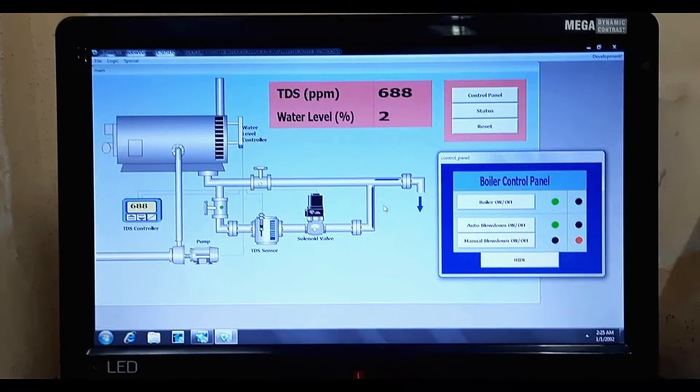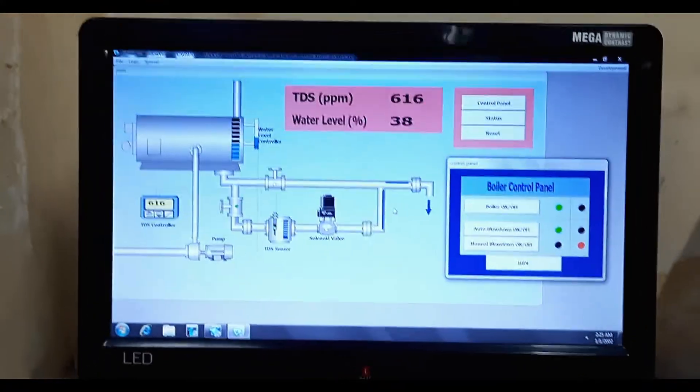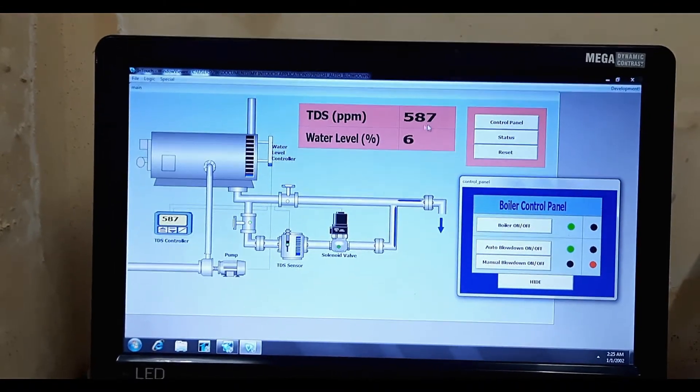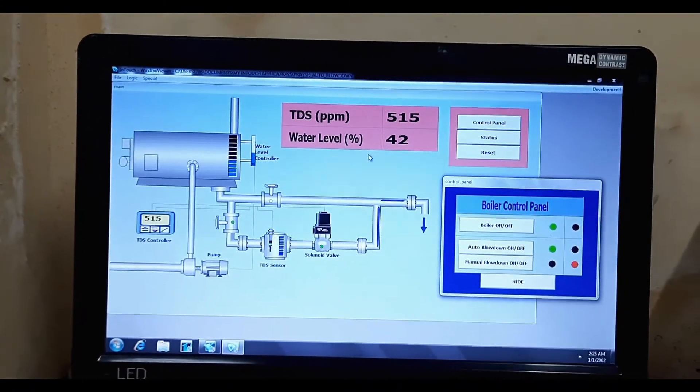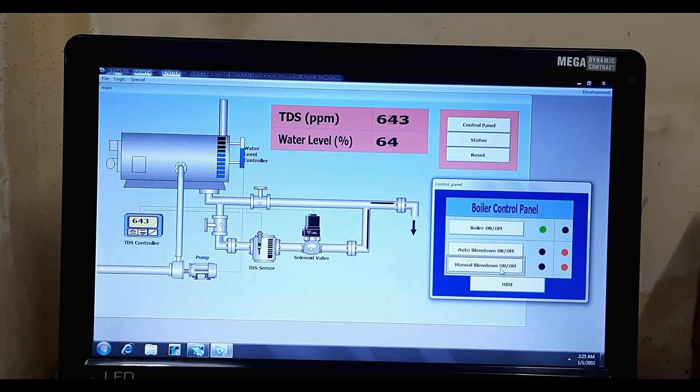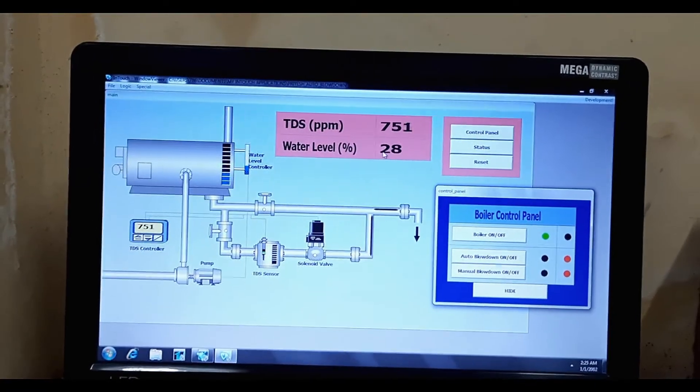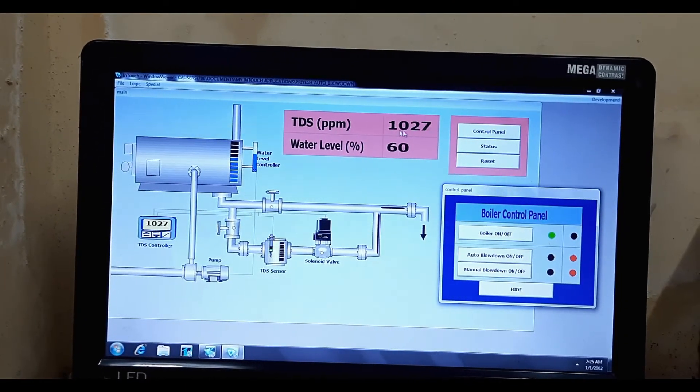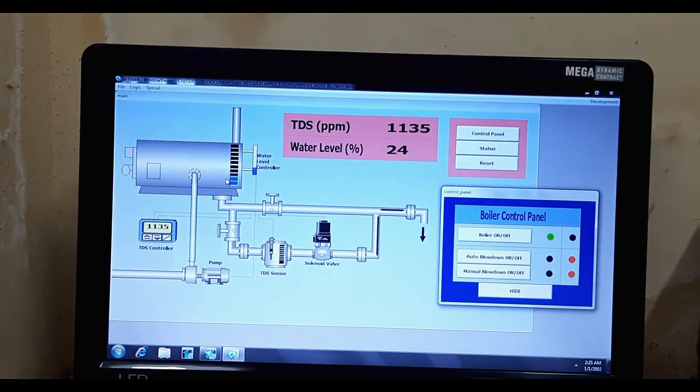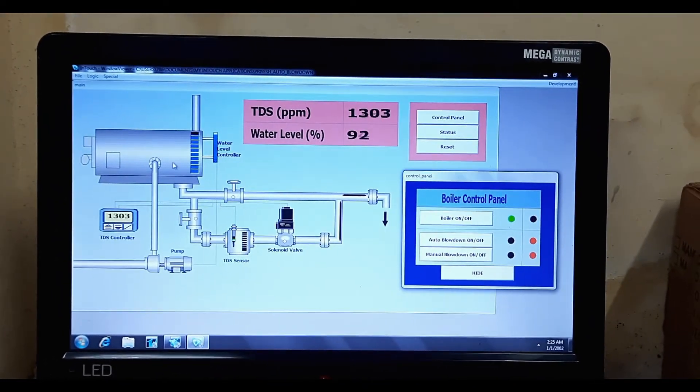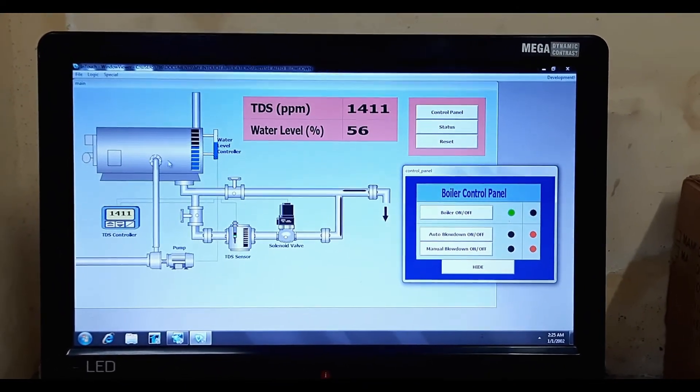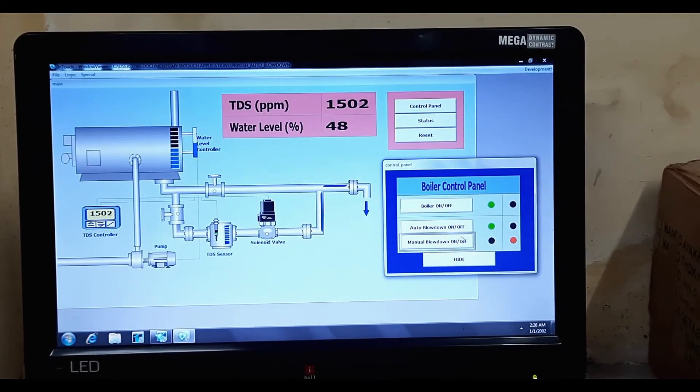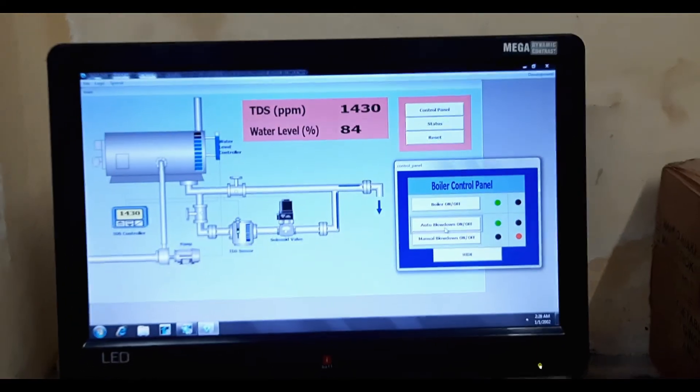Like if I now turn all the blowdown systems off, then the TDS will simply keep on increasing. One may also simply ask that what if we turn off both blowdown systems, then nothing will happen. Like this boiler will keep on operating, but the TDS of the water will keep increasing. And after a point, this TDS will reach a particular value where it will become a problem for the internals. So we need this automatic or any type of blowdown. Thank you.